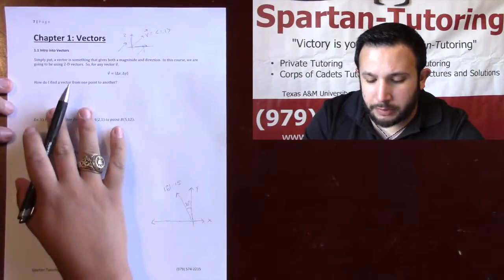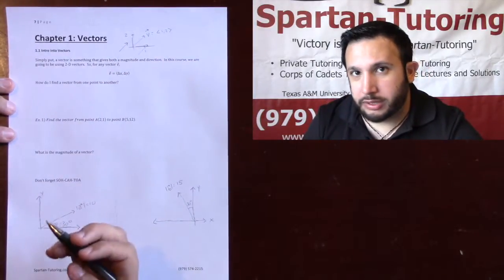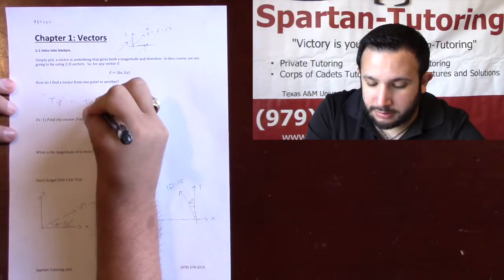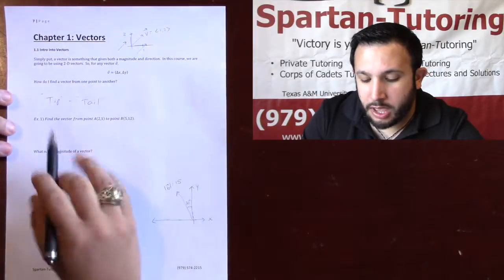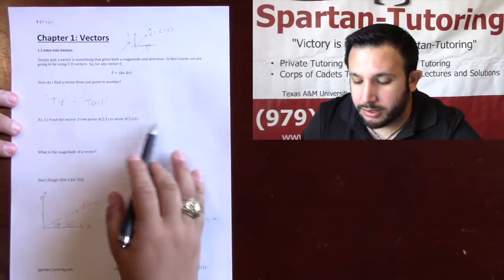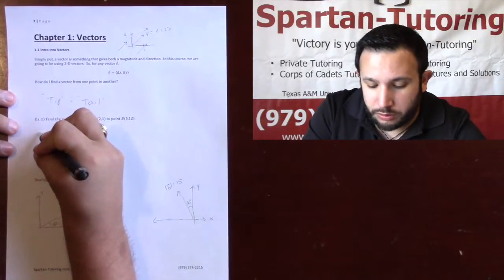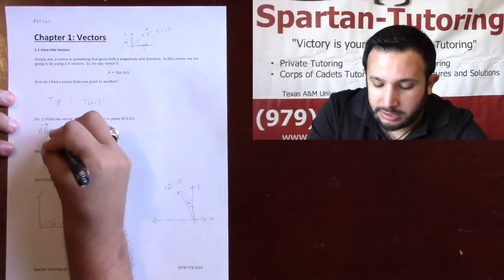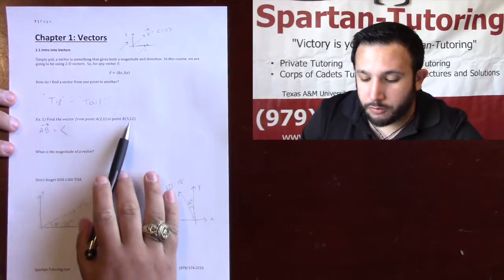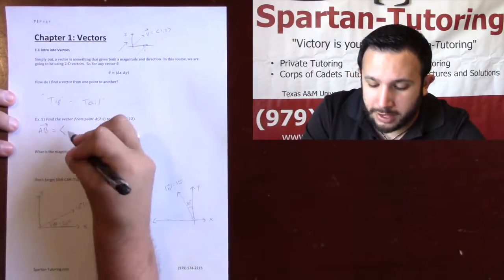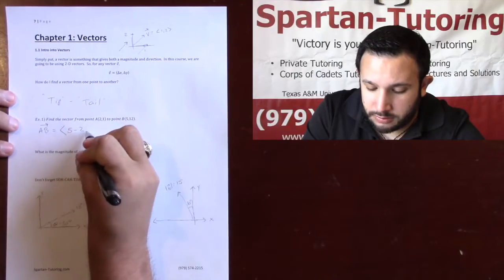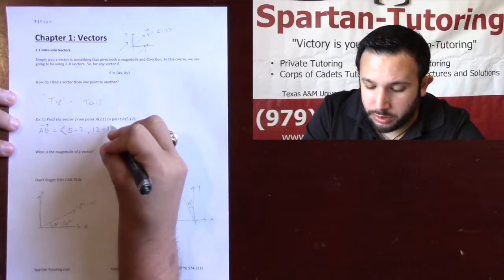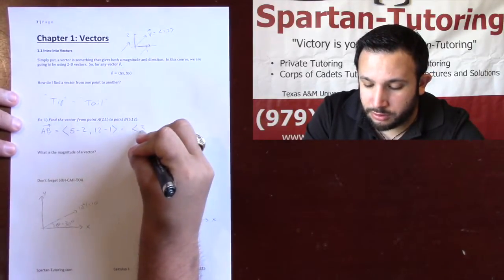Let's talk about how to find a vector from one point to another. I always think about this as tip minus tail. So if I want to find the vector from point A(2, 1) to point B(5, 12), the vector AB has its tip at B and its tail at A. For the X component I do tip minus tail: 5 minus 2. For the Y component: 12 minus 1. So this becomes the vector ⟨3, 11⟩.